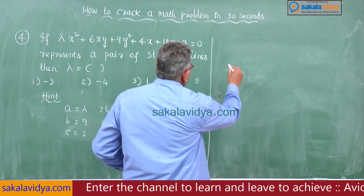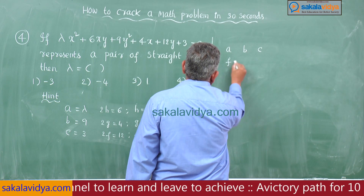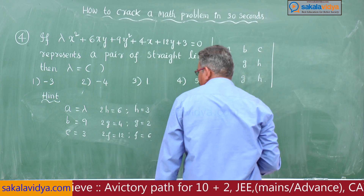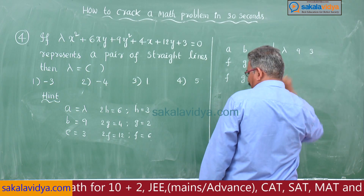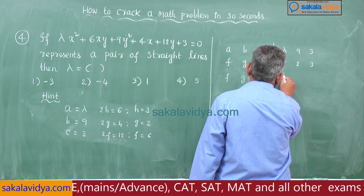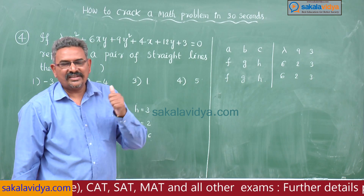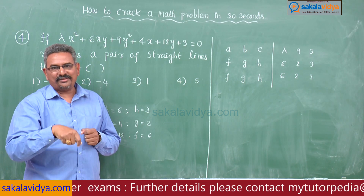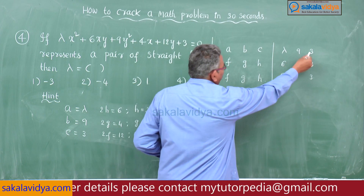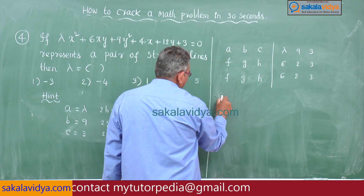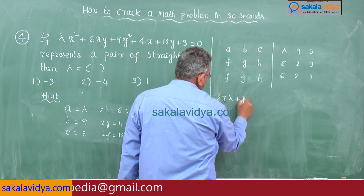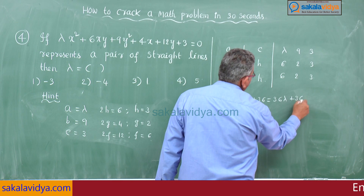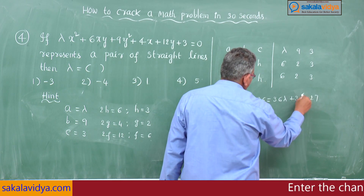Now apply the shortcut: arrange a, b, c, f, g, h, f, g, h. So a, b, c = λ, 9, 3 and f, g, h = 6, 2, 3, repeated as 6, 2, 3. Remember this shortcut: the sum of the product of the elements of the rows equals the sum of the product of the elements of the columns.